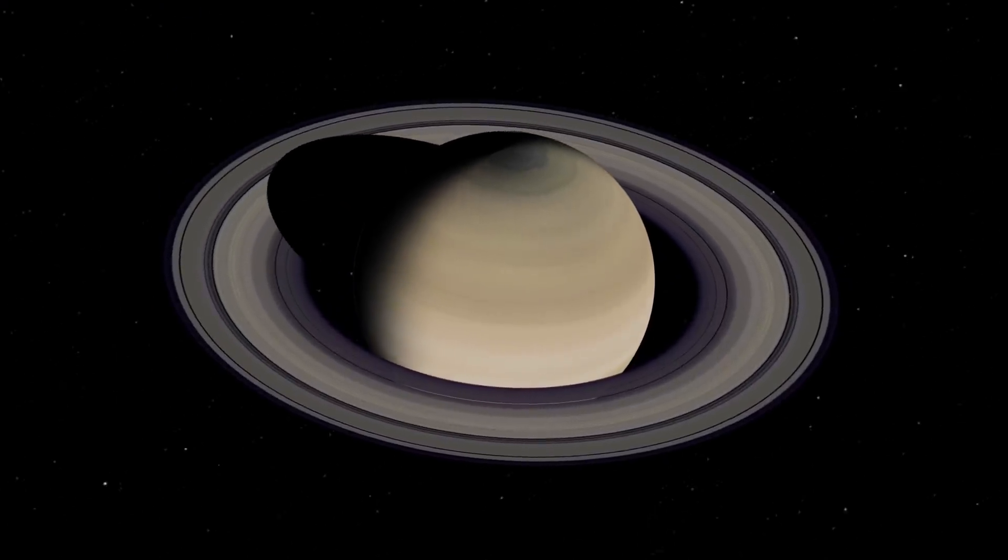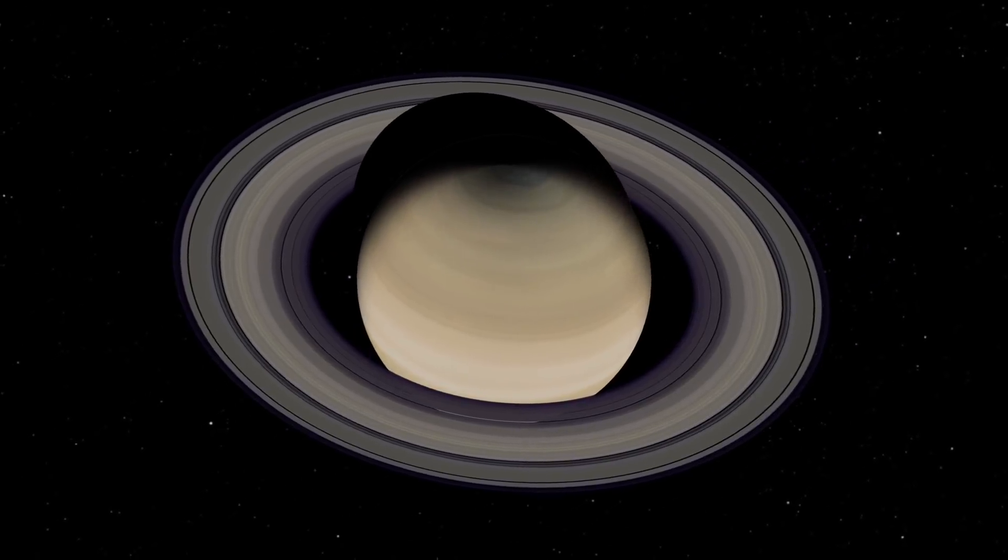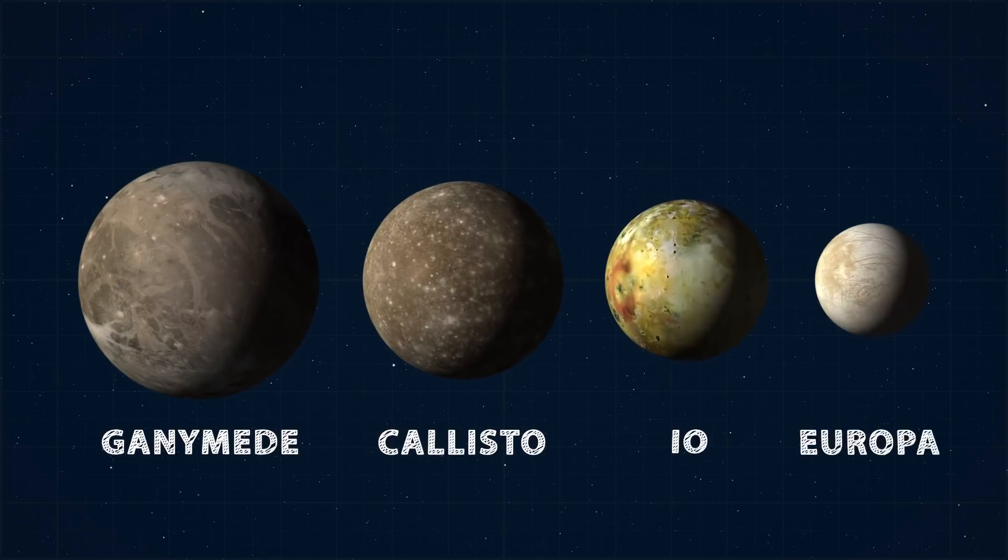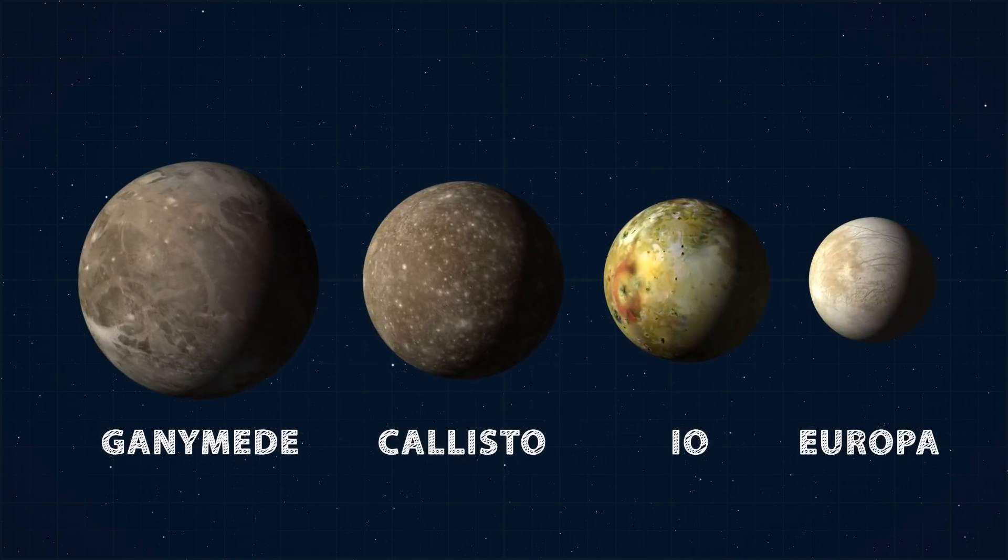Later Galileo improved the telescope, allowing him to observe even fainter points in the sky invisible to the naked eye. He discovered Jupiter's moons, Ganymede, Callisto, Io, and Europa, and Saturn's moons soon followed, mostly discovered by Cassini.